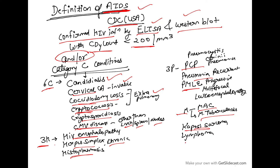There are also 2M's: Mycobacterium avium complex and Mycobacterium tuberculosis. Malignancies include Kaposi sarcoma and lymphoma. However, if a person has a confirmed HIV infection and a CD4 count of less than 200, they will be called AIDS regardless of these conditions, as per the CDC USA definition.